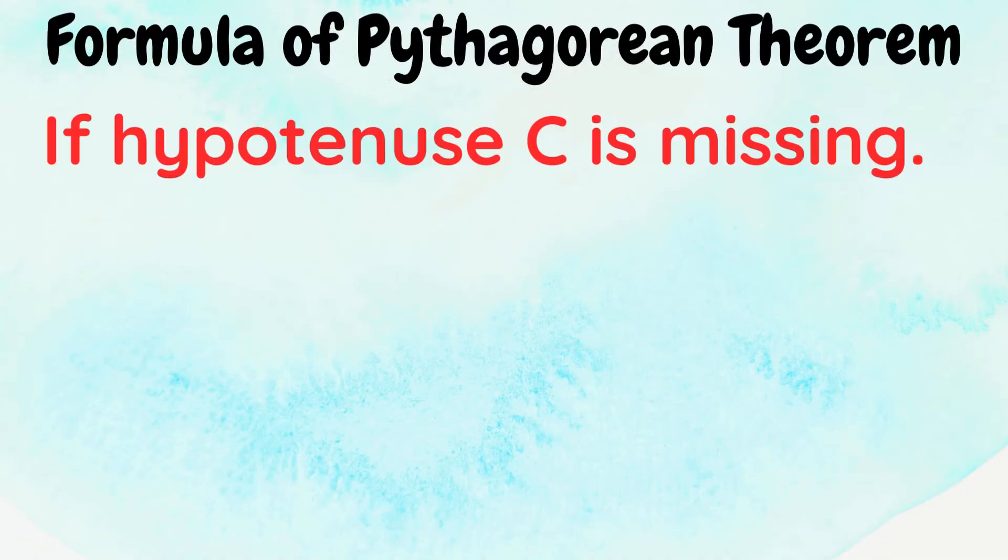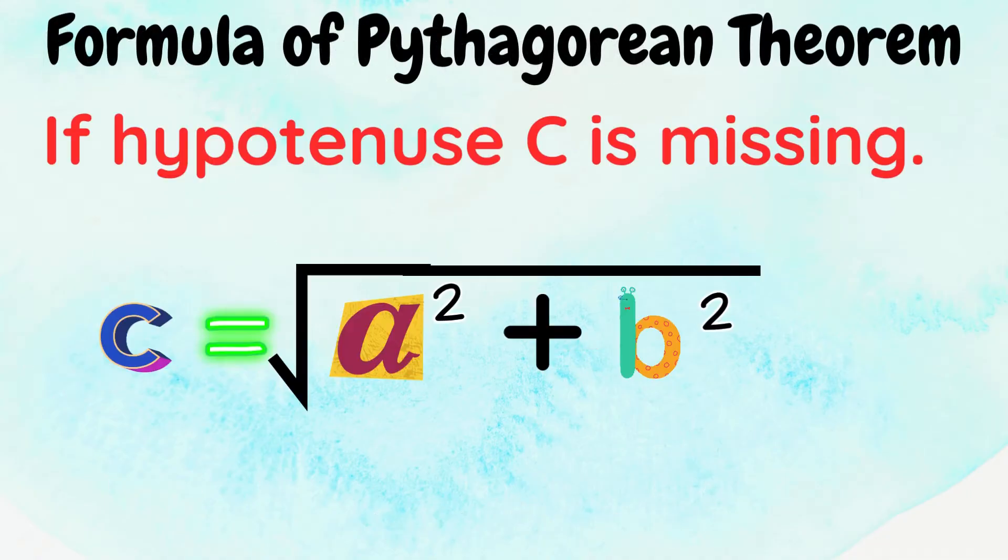Formula if the hypotenuse c is missing. We have, c is equal to the square root of a squared plus b squared.